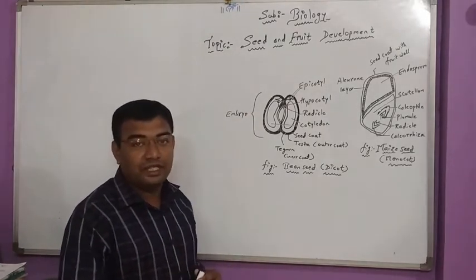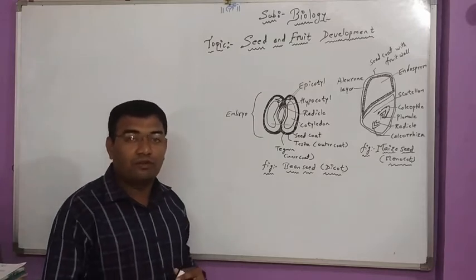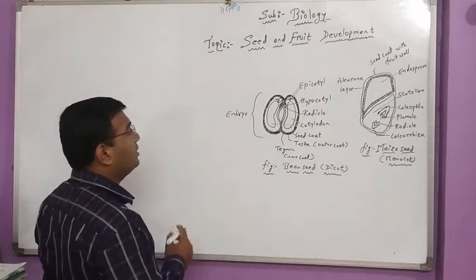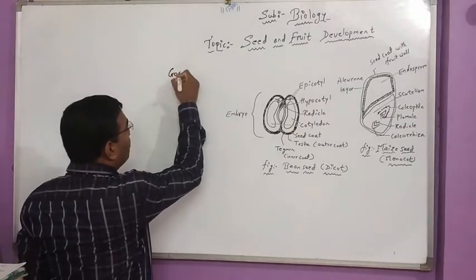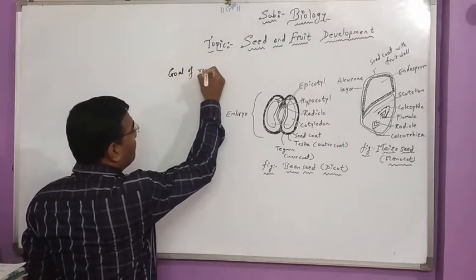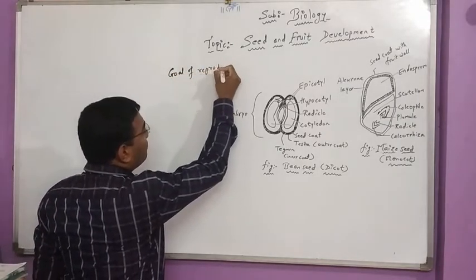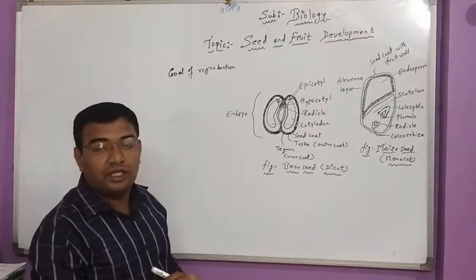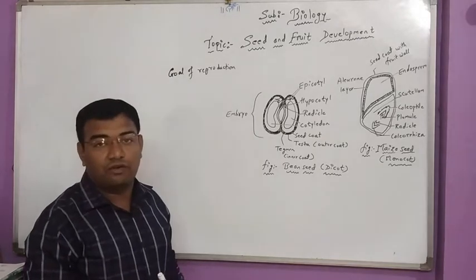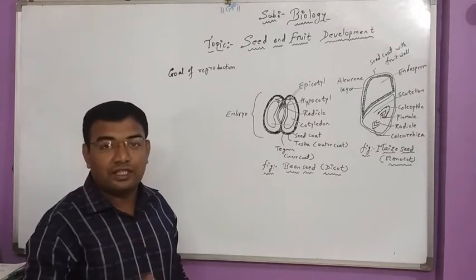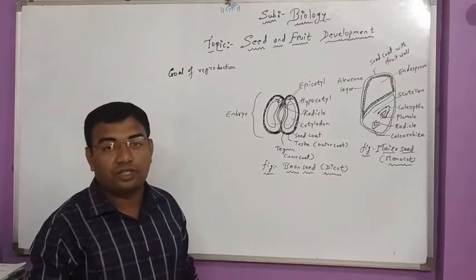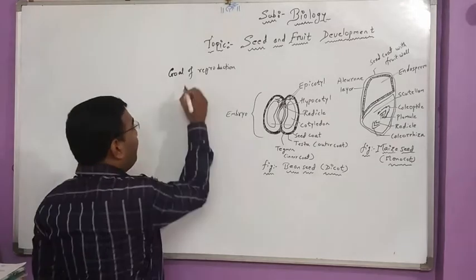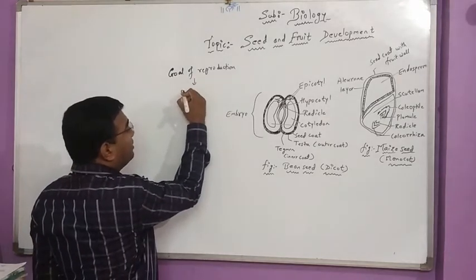How the seed and fruit get developed and what is the goal of reproduction. First, before we discuss about the seed and fruit development, we should know about the goal of reproduction. The goal of reproduction is an important topic for the continuation of life. The life gets continued only when there is a production of offspring.